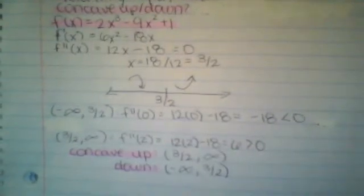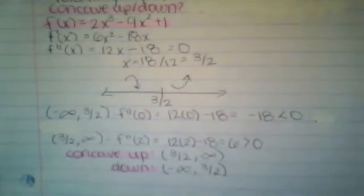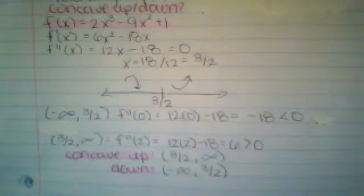This is not a critical number, but we have to test around it. Testing on the left side, we'll pick 0. And plugging that into the second derivative will give us a negative number, which means that it's concave down.